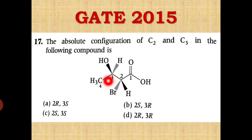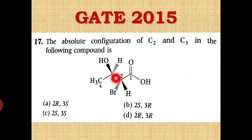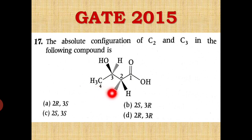This next question is from the GATE 2015 examination. You can see this molecule. The carboxylic acid being topmost in the IUPAC series gets number 1, and then we number carbons 2, 3, and 4. You have to find the absolute configuration at carbon 2 and carbon 3. Try it out yourself using the same rules.